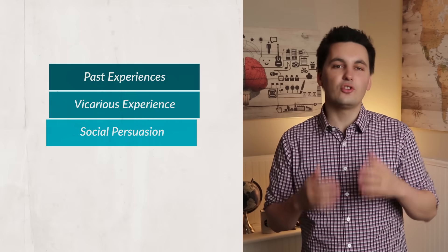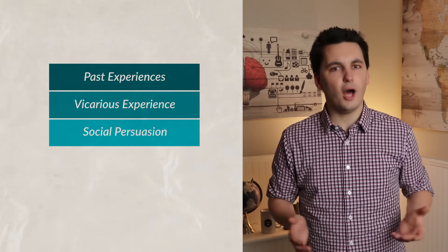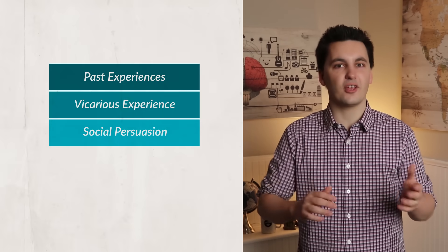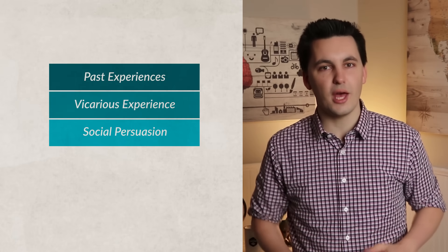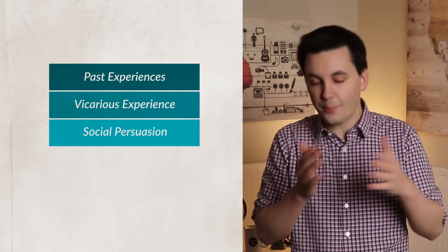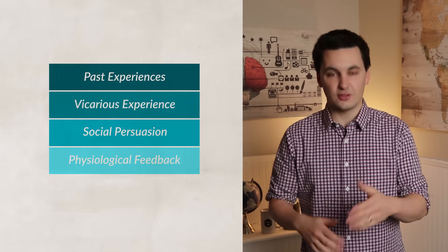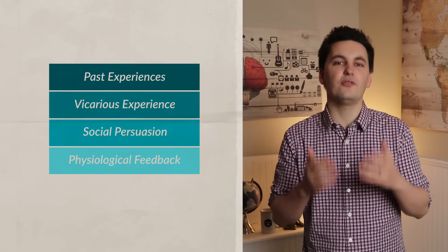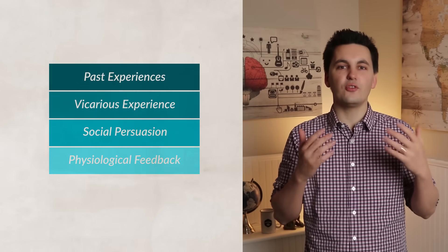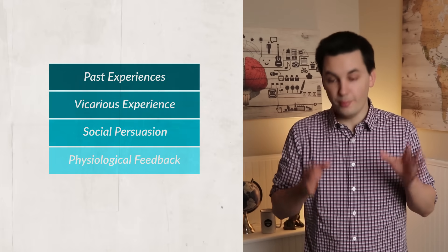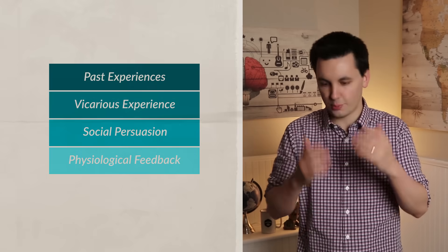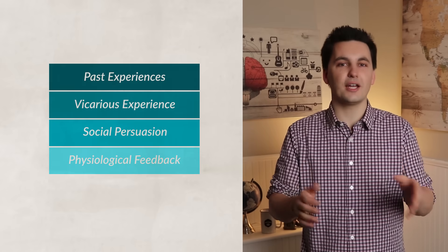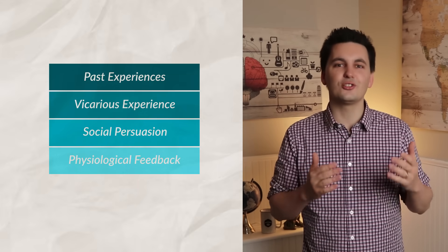Another aspect of self-efficacy is social persuasion. When other individuals give you encouragement and support, you'll develop a higher self-efficacy for the task at hand. But if others continuously say you can't do something or that it's too difficult, the opposite will happen. Lastly, there is physiological feedback — how your body reacts to the task you're trying to perform. For example, if you have to give a class presentation and you start to feel butterflies and your heart starts racing, you might perceive that as excitement, which would increase your self-efficacy, or you might perceive it as terror, which would decrease your self-efficacy.